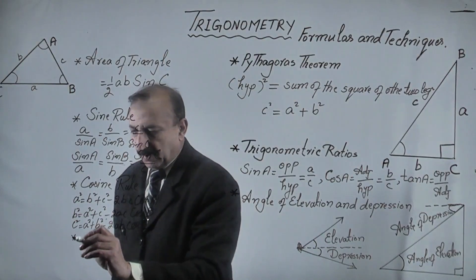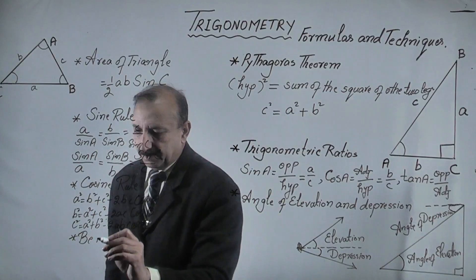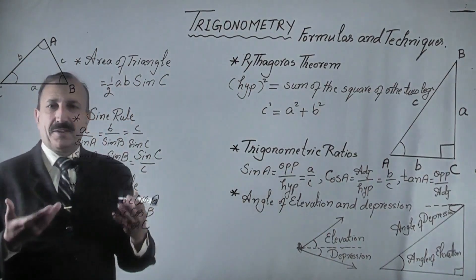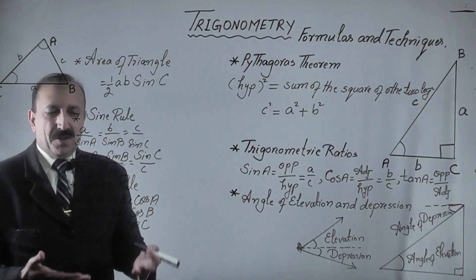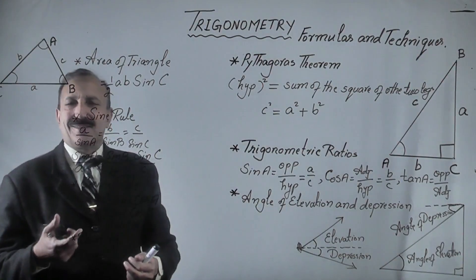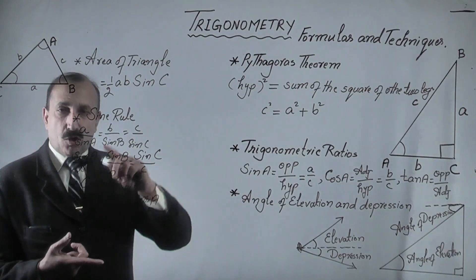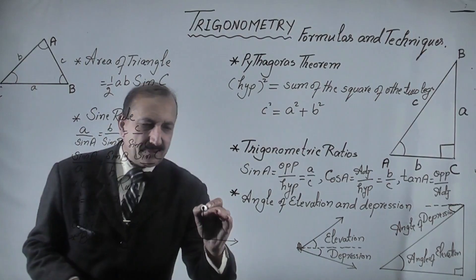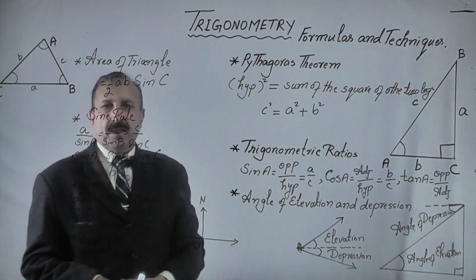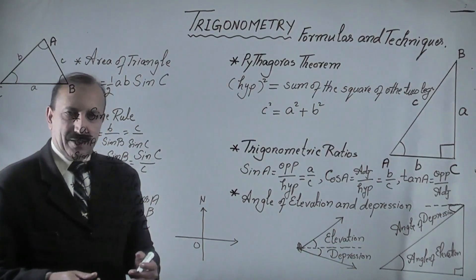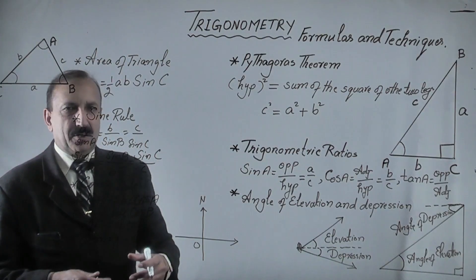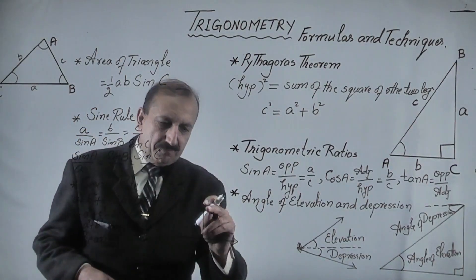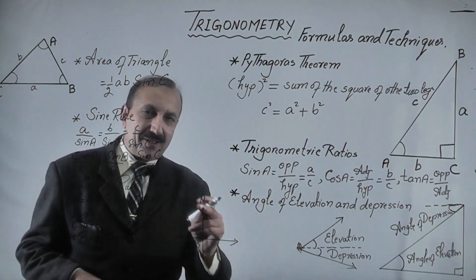The next concept is bearing. What is bearing? Bearing is an angle measured from north in a clockwise direction. If we look here, we have a coordinate axis — this is north, this is the origin. A bearing is the measurement of an angle from the north direction, and every angle measured from north in a clockwise direction is called a bearing.